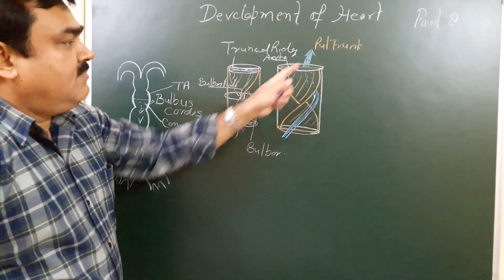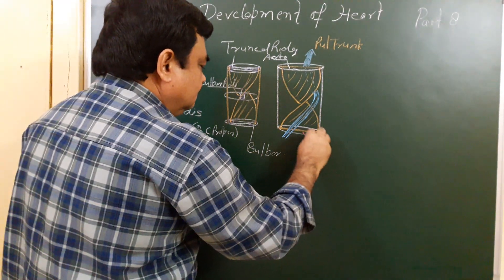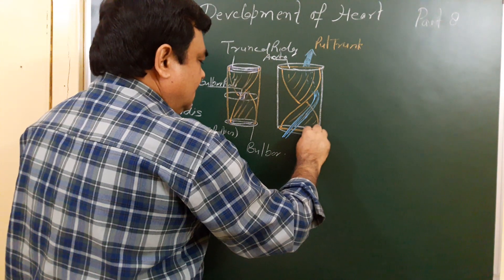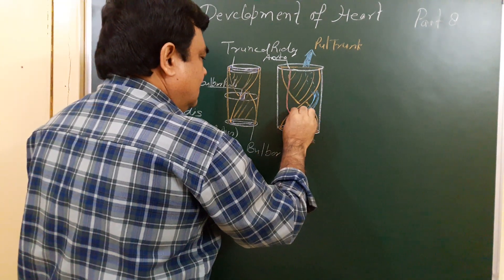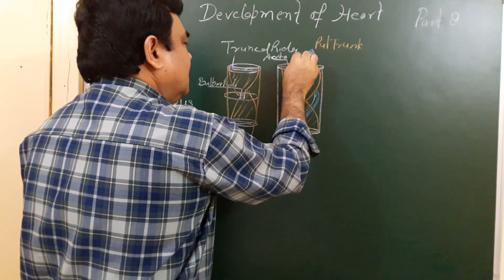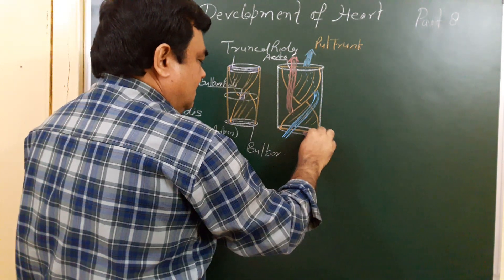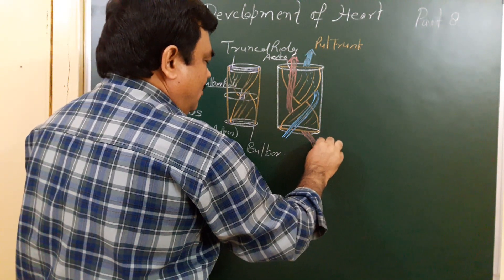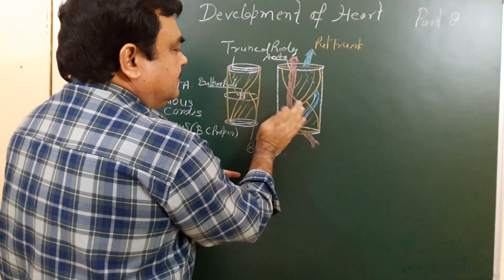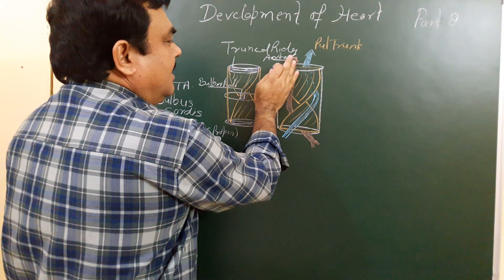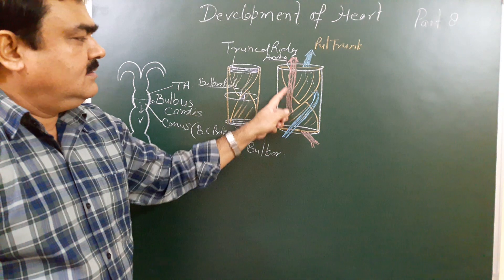This is the direction of the pulmonary trunk. This is the direction of the aorta — it lies behind this septum, then anterior to the septum, and passes like this. So this is the direction of the pulmonary trunk and this is the aorta.